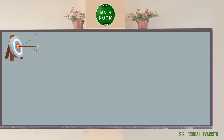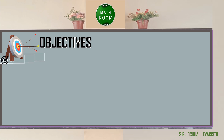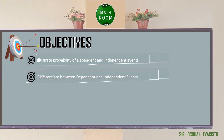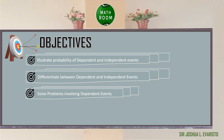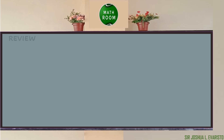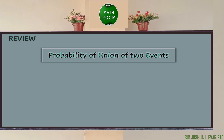Before we proceed on our discussion, let me present to you our objectives. At the end of this lesson, you should be able to illustrate the probability of dependent and independent events, and differentiate between dependent and independent events.